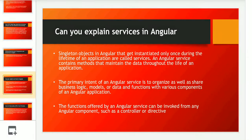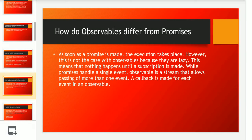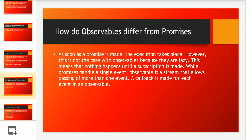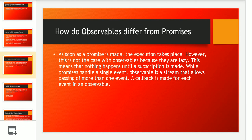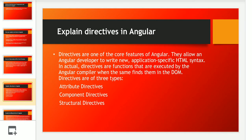The next question was: how do observables differ from promises? This is one of the core questions — in every Angular interview we can expect this. As soon as a promise is made, execution takes place. But with observables it's different — until and unless you subscribe to the observable, it won't happen. While promises are handled in a single event, observable streams allow passing of more than one event; a callback is made for each event in an observable, whereas in a promise we cannot do that.